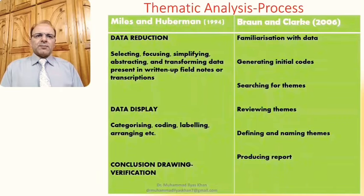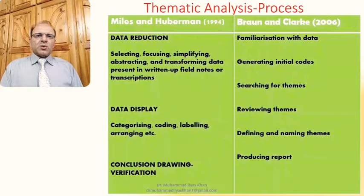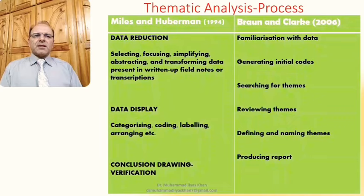The Braun and Clarke model is also a comprehensive model, which has six stages: familiarization with data through reading and rereading; generating initial codes; searching for themes; reviewing those themes in the light of empirical data; further defining and labeling the themes; and finally producing a report after the first five stages of data analysis.